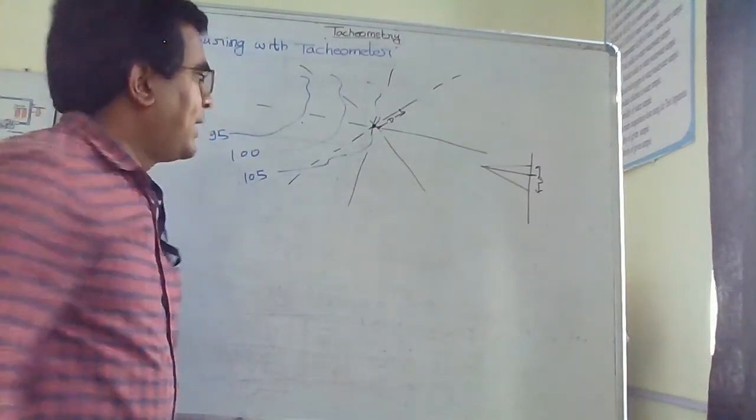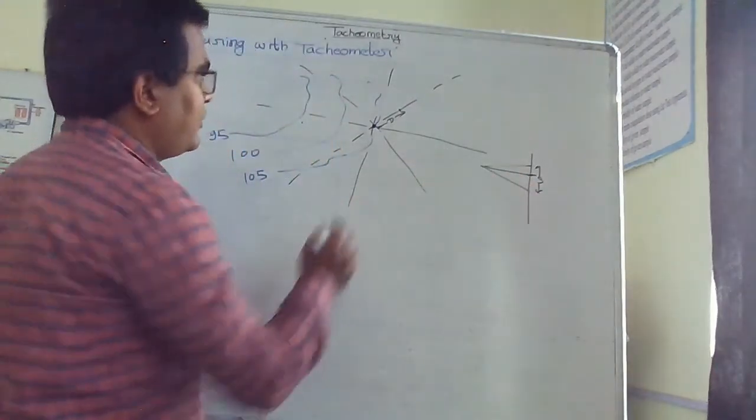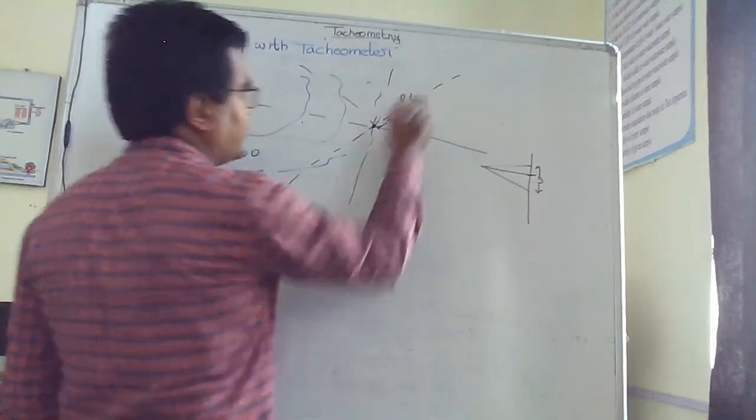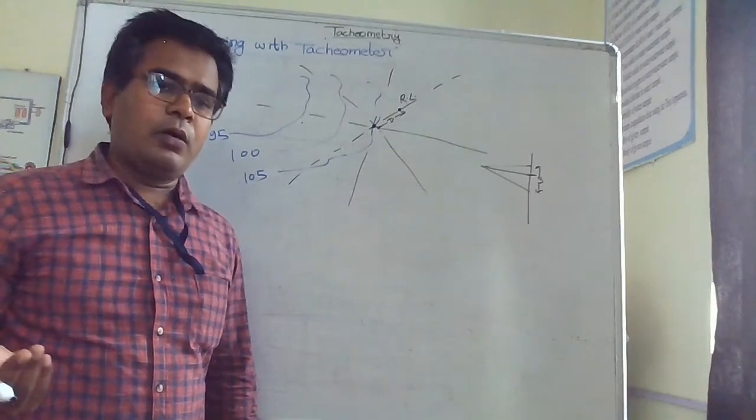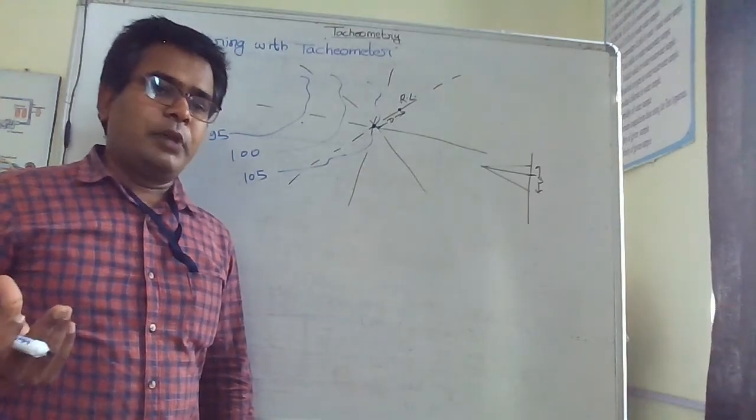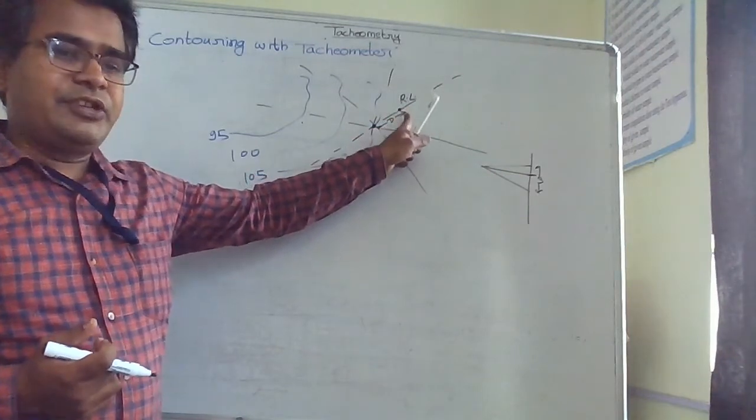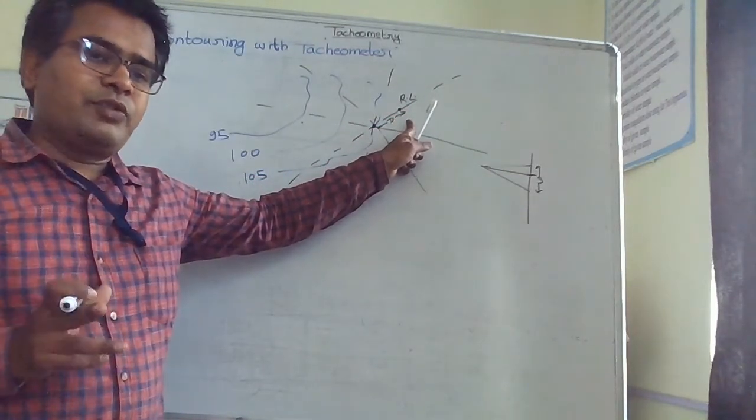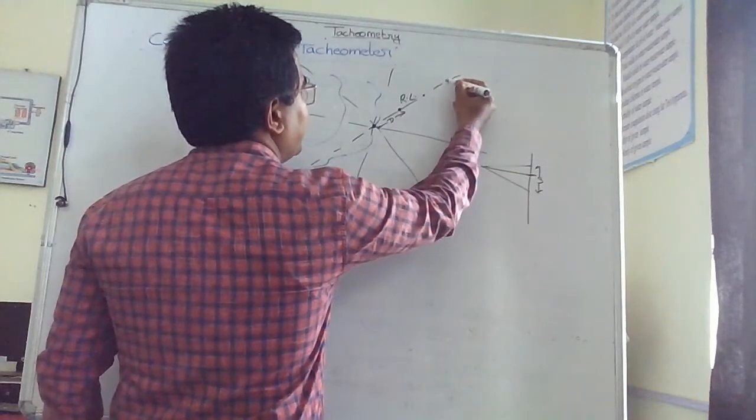By knowing the middle cross hair reading and measuring the angle of elevation or depression, I will get the RL of this point. We have discussed how to find the RL and distance of a point using the tachometer. By taking readings at each staff position, we come to know the RL and distance of different points.